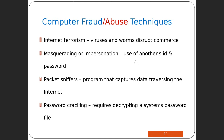The second technique is masquerading or impersonation, which is using another person's ID or password — stealing someone else's credentials to gain financially, or to harm that person. The third technique is packet sniffers — a program that captures data traveling through the internet. It doesn't stop or change the data, it just sniffs — meaning it captures some of that data to use illegally or in an unauthorized way.